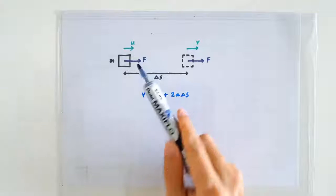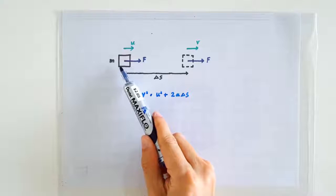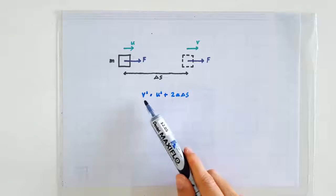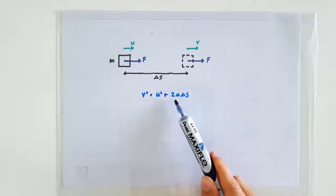Since it's a constant force, the mass must be accelerating at a constant rate. Therefore, we can use the equation of motion v squared equals u squared plus 2as.